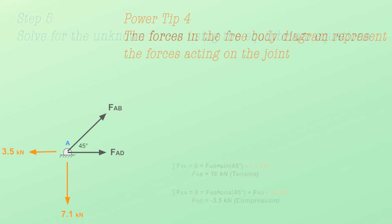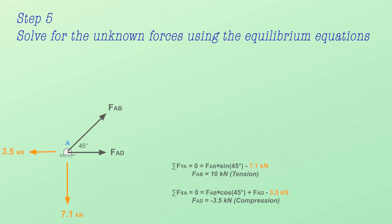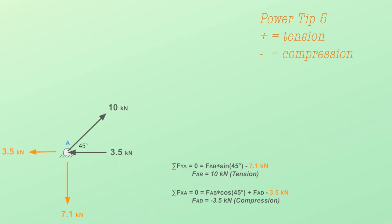Step number 5 – Solve for the unknown forces using the equilibrium equation. Power tip 5 – The truss member is in tension if the calculated force is positive and compression if the calculated force is negative.